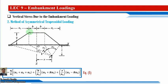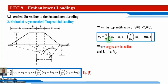When the top width b equals zero, alpha2 equals zero, and the formula for vertical stress becomes: sigma z = q/π × [alpha1 + alpha3 + (x/a1)(alpha1 − r·alpha3)], where r is the ratio a1/a2. If b is not equal to zero, use equation 5.